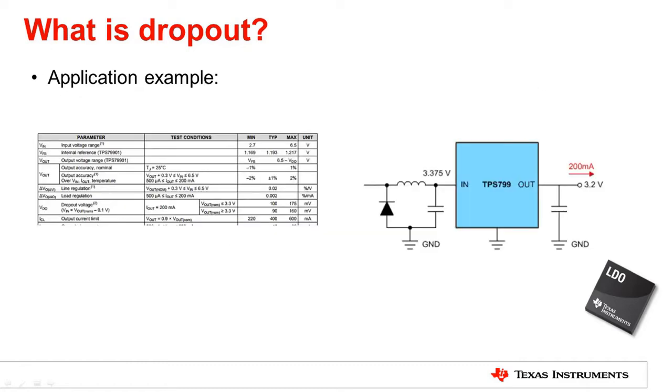As an example, consider an LDO like the TPS799, as shown on the right. We picked this LDO because it has a fixed 3.3 volt output we can leverage. If we look at the datasheet, we can determine that this LDO's maximum dropout voltage is specified at 175 millivolts for a current output of 200 milliamps. Let's now assume that the input voltage drops to 3.375 volts. Referring to our previous formula, our LDO will now enter dropout operation and the resulting output would be 3.2 volts instead of 3.3 volts.